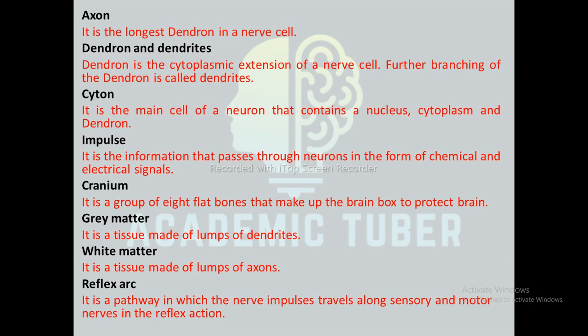Gray matter is a tissue made of cell bodies and dendrites; the rose-colored part of the brain and spinal cord is called gray matter, composed of cell bodies, dendrites, synapses, and terminal parts of axons. White matter is a tissue made of axons; the white part of the brain and spinal cord is called white matter, composed of axon parts of neurons. The reflex arc is a pathway in which nerve impulses travel along sensory and motor nerves in a reflex action.